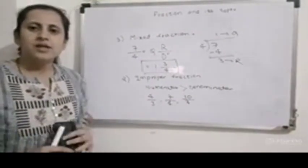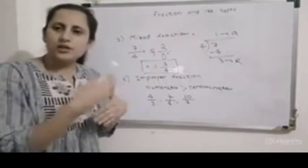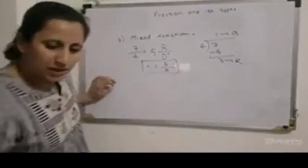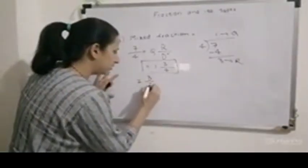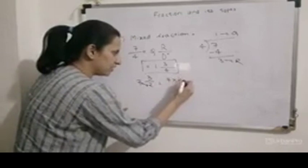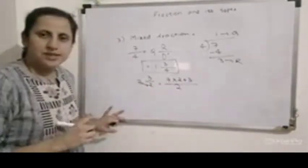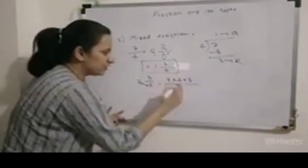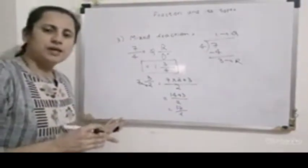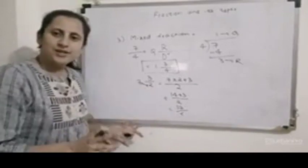We can also do the reverse — convert a mixed fraction into an improper fraction. Suppose I have the mixed fraction 7 and 3 by 2. We multiply: denominator into whole number plus remainder, all over the denominator. So 2 into 7 plus 3 equals 14 plus 3, which is 17 by 2. This is an improper fraction. Hope you all understood. Thank you very much, bye.